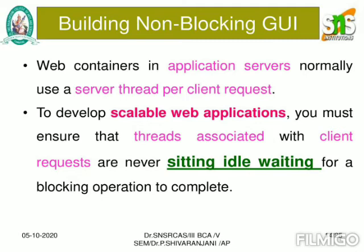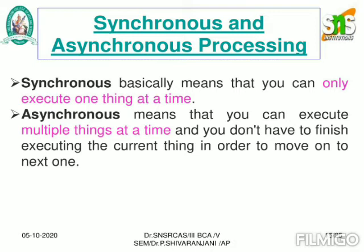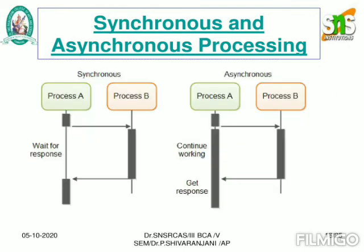You should know two different types of processing: synchronous and asynchronous. Synchronous processing means you can only execute one thing at a time. Asynchronous processing means you can execute multiple things at a time — you don't have to finish the current task before moving to the next one. This diagram shows a diagrammatic representation of asynchronous and synchronous processes with two processes, Process A and Process B.